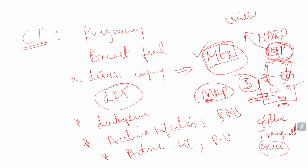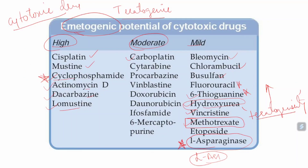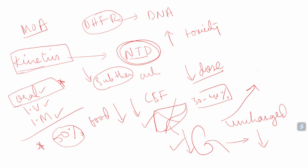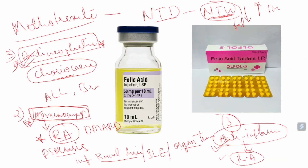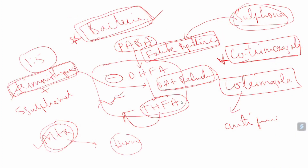Methotrexate can cause resistance in both neoplastic cells and normal cells. To summarize today's lecture: we covered the mechanism of action, adverse effects, drug interactions, pharmacokinetics, and resistance of methotrexate. It is available in oral and IV form. The normal dose is 7.5 to 25 mg given once a week, and it is particularly used for rheumatoid arthritis.